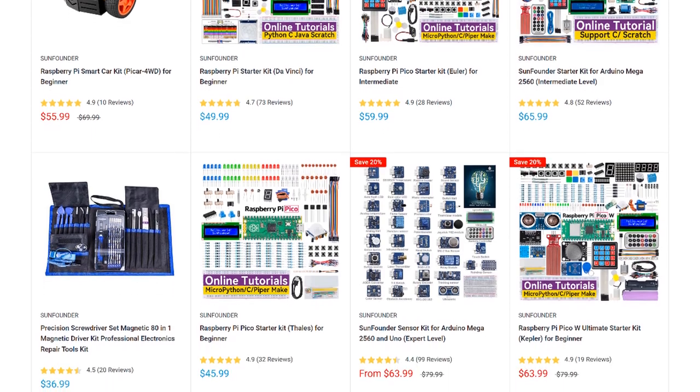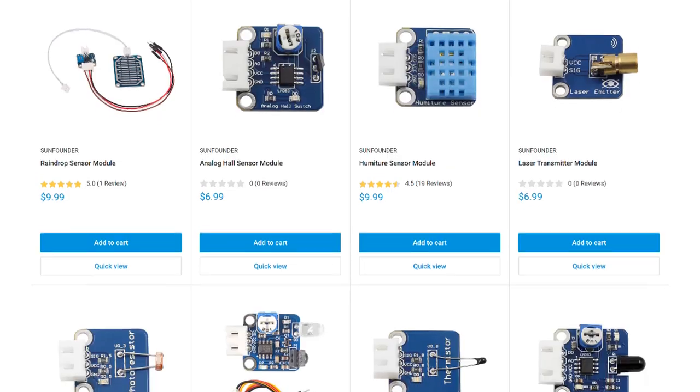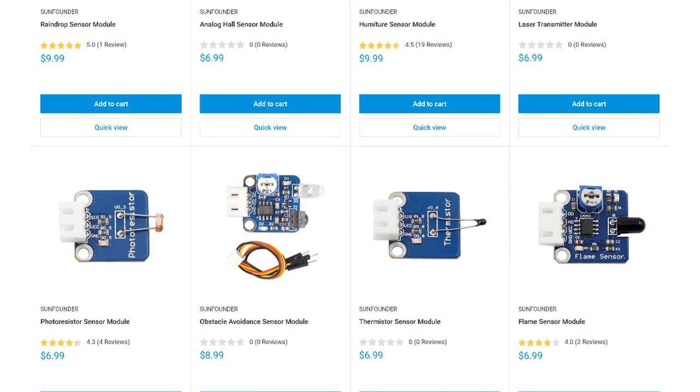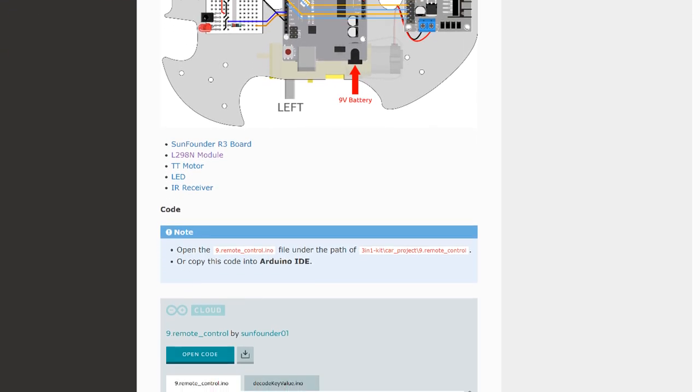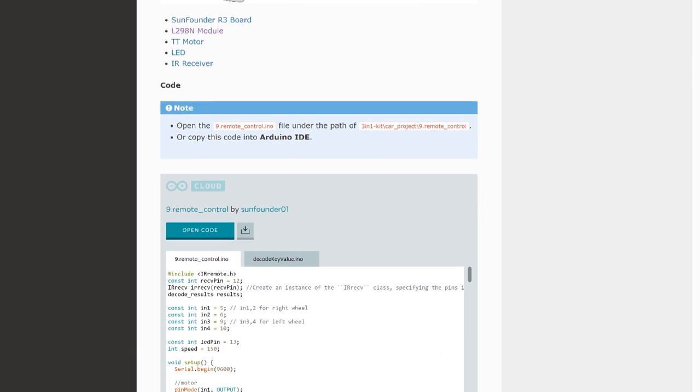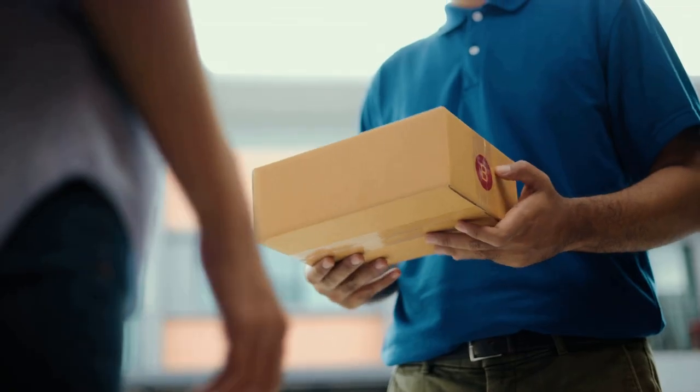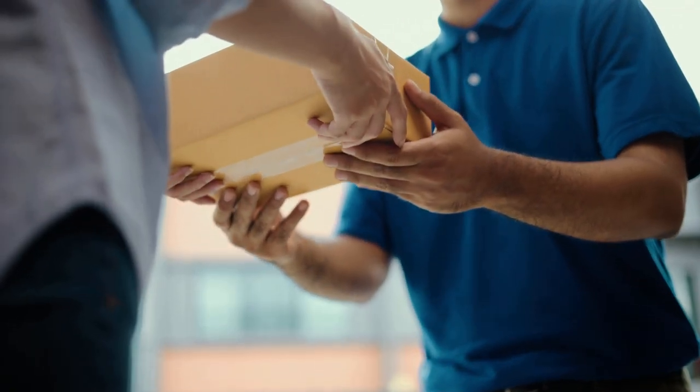SunFounder is my go-to source for sensors, modules, and other parts for the Arduino and Raspberry Pi. They have a huge selection of STEM, robotics, and IoT kits, and lots of useful sensors and modules. Every product has an online tutorial with wiring diagrams and example code. They also offer free shipping on all orders with no minimum. Give them a try at www.sunfounder.com next time you need to order some parts.